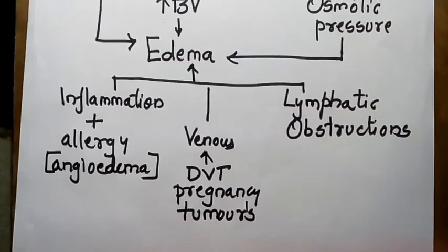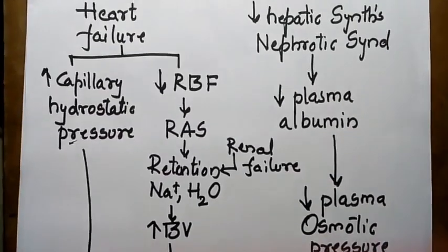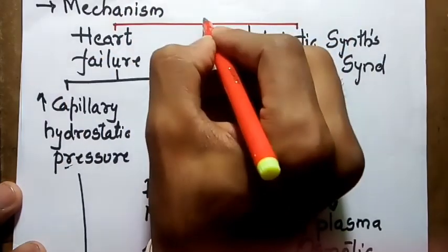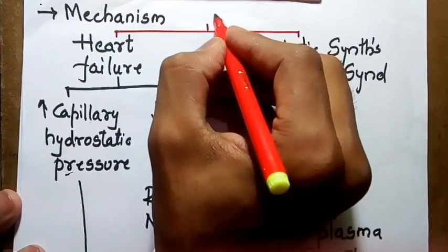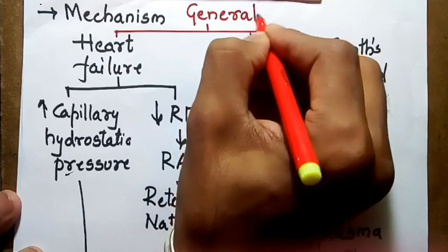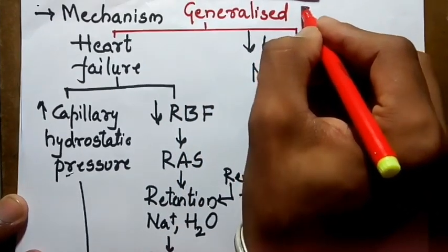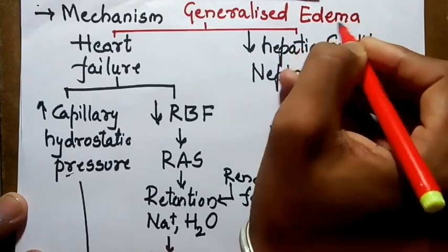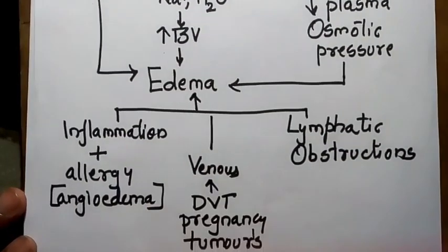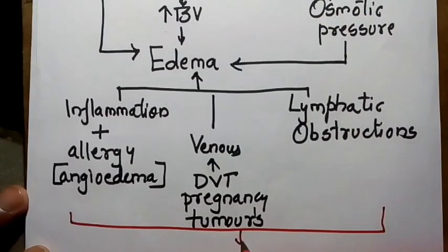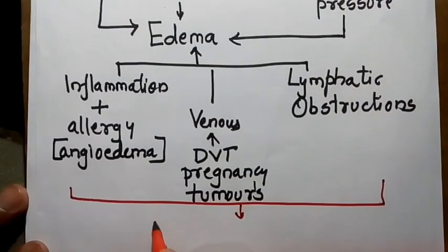Heart failure, hepatic synthesis disorders, and nephrotic syndrome may all cause generalized edema. Whereas inflammation, venous manifestations, and lymphatic obstruction may cause localized edema.